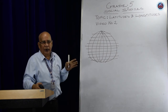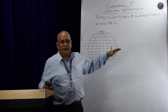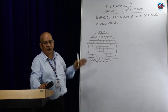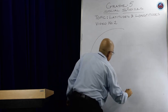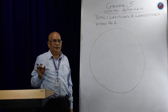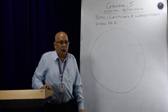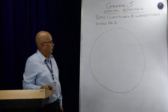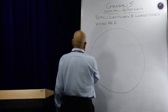Remember, latitudes are horizontal lines and longitudes are vertical lines. Latitudes are lines which go right from the east to the west, or from the west to the east.